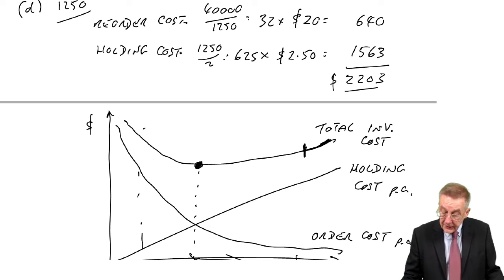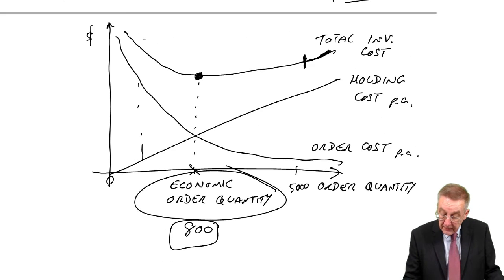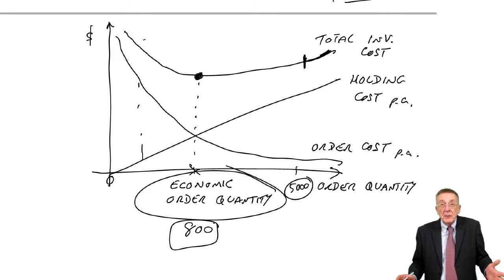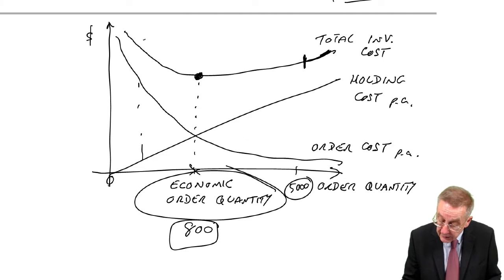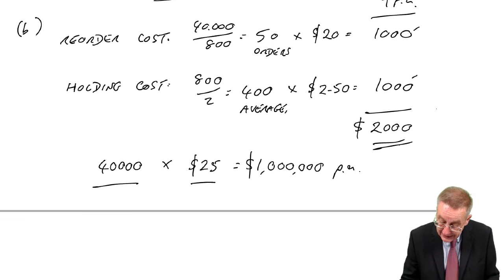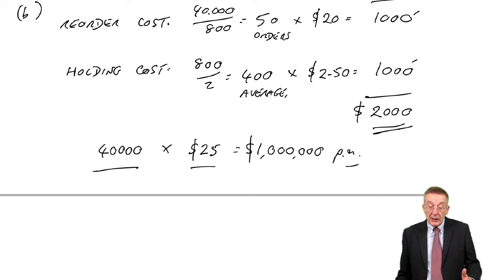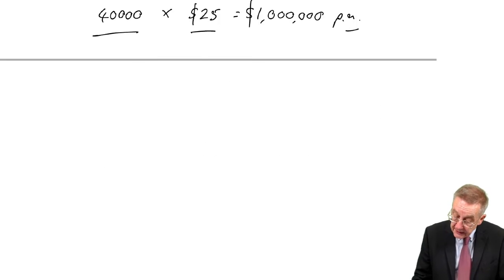But it could be worth paying more inventory costs if the purchase price is lower. Well, here, there's no quick way, there's no formula. The only way we can do it is by costing out the alternatives. So let's do it.